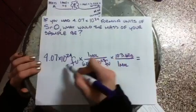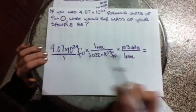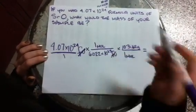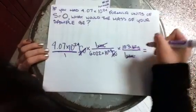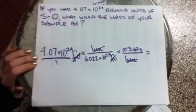So your formula units cancel because technically this is over 1. Your moles cancel, so that leaves you with grams, which is all you need.